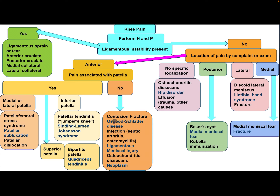If there is no pain at the anterior aspect of the patella, the differential diagnosis includes contusion, fracture, Osgood-Schlatter disease, infection, septic arthritis, osteomyelitis, ligamentitis, meniscal tear, osteochondritis dissecans, and neoplasm. If the pain has no specific localization, the differential includes osteochondritis dissecans, hip disorder, effusion, trauma, and other causes.